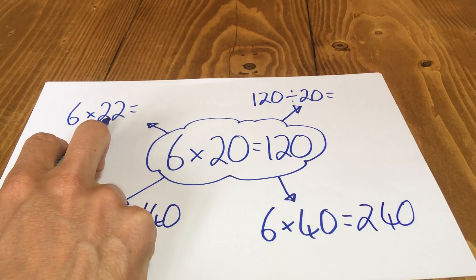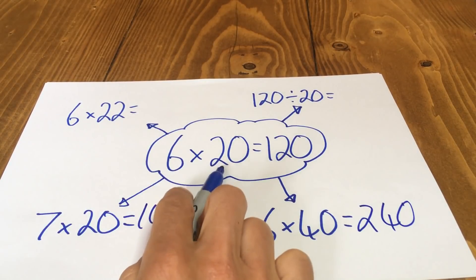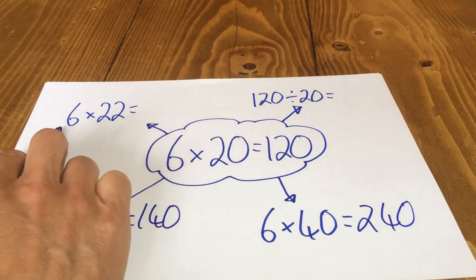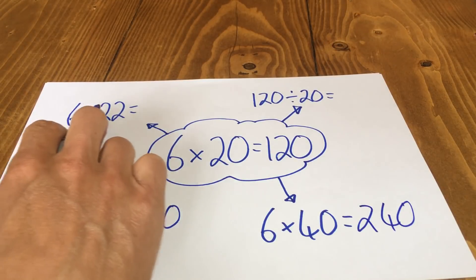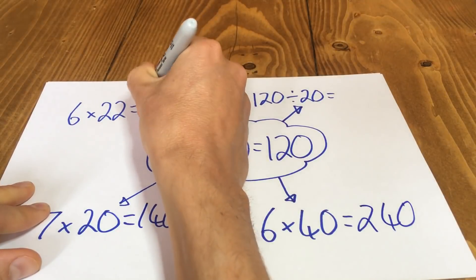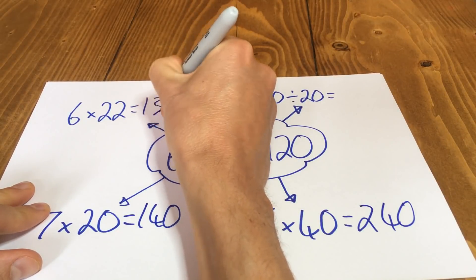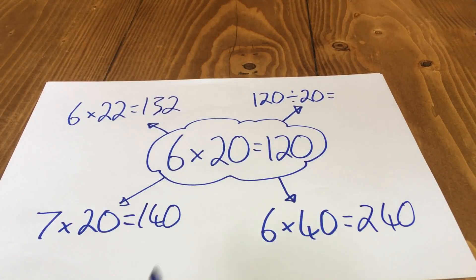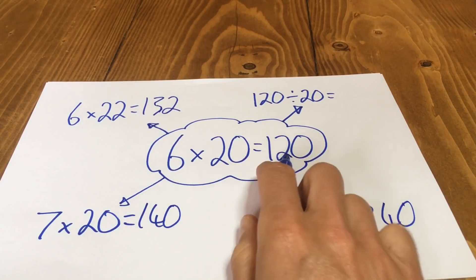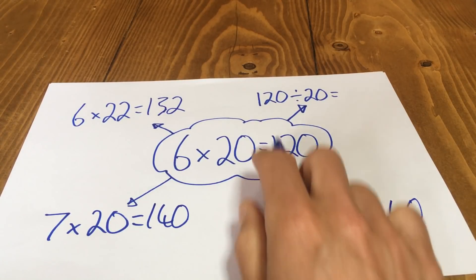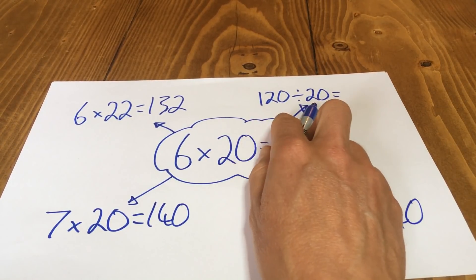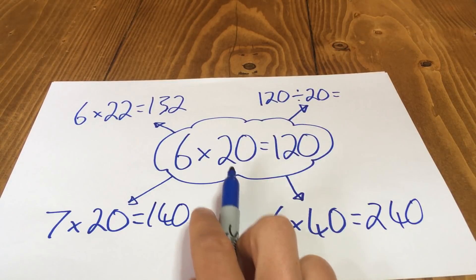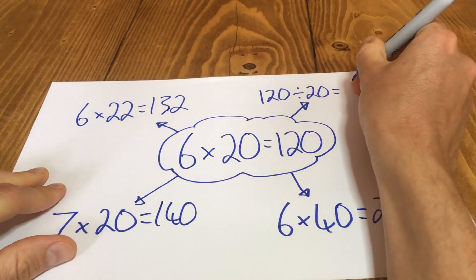6 multiplied by 22, it will be, compared to this one, it's 2 more lots of 6. So I just need to add 12 to this 120, 132. And so here 6 multiplied by 20 gives me the whole of 120 and this whole of 120 divided by 20. How many 20s in 120? Of course there are 6.